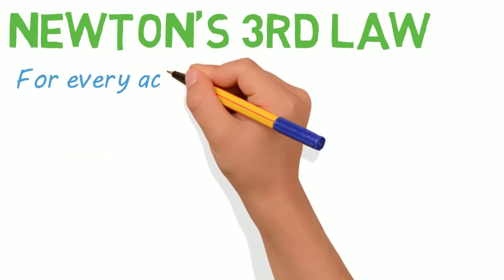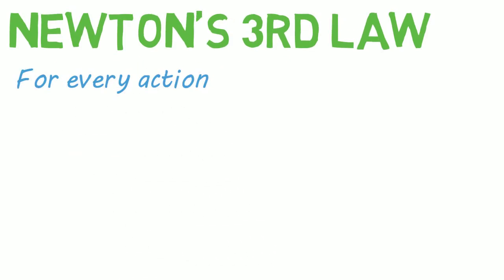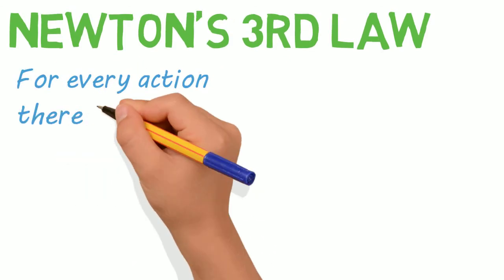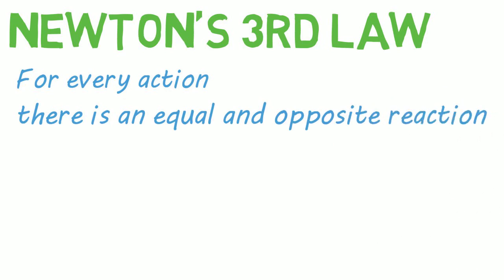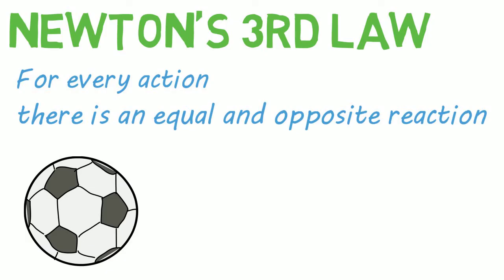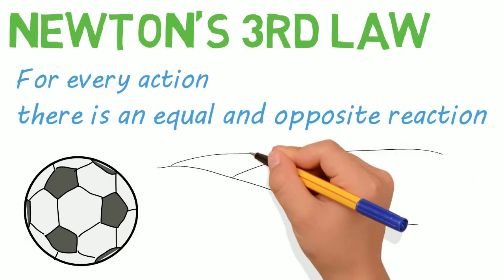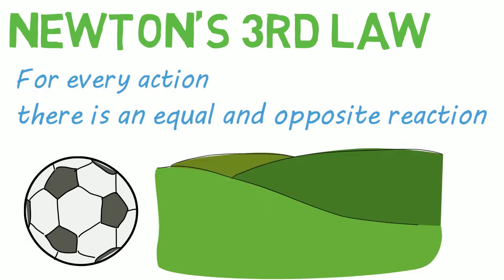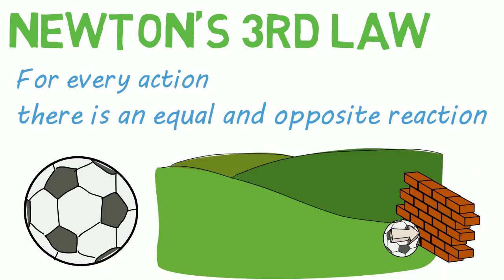The third law simply says that for every action, you better believe there's an equal and opposite reaction. Say, for example, you have yourself a ball. You roll it down a hill and it runs into a wall. The ball exerts a force on the wall made of brick, but the wall responds with a force as well, just as quick.